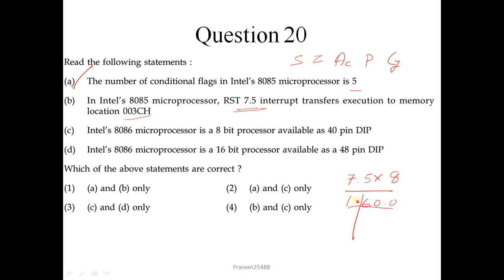Convert it into hexadecimal. Divide 60 by 16, which is 3 with remainder 12. In hexadecimal, 12 is C. So 3C will give the vector location 003CH. This is correct. Intel 8086 microprocessor is an 8-bit processor available in 40-pin DIP - but 8086 is a 16-bit processor, so this is not correct. 16-bit processor available as 48-pin DIP - this is also not correct. So correct option is A and B, option 1 is correct.